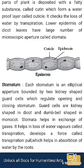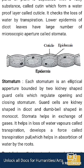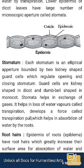Stomata is a pore guarded by two kidney-shaped guard cells, which regulate the opening and closing of stomata. Guard cells are kidney-shaped in dicot plants, whereas they are dumbbell-shaped in monocot plants.